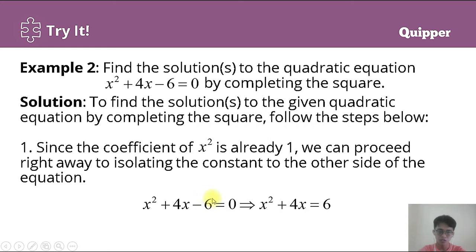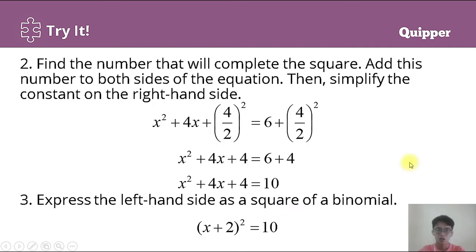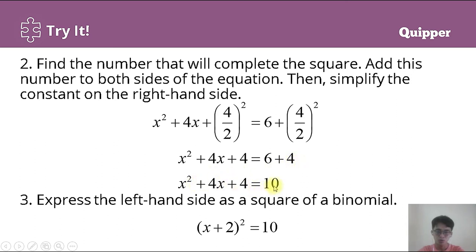Now we can perform the completing the square. We take the middle term coefficient, which is 4, divide by 2 to get 2, then square it to get 4. Since we add 4 to the left side, we must also add 4 to the right side. So x² + 4x + 4 = 10.